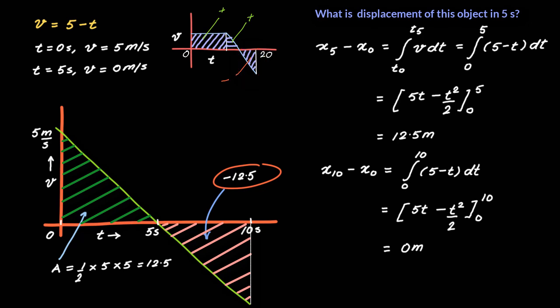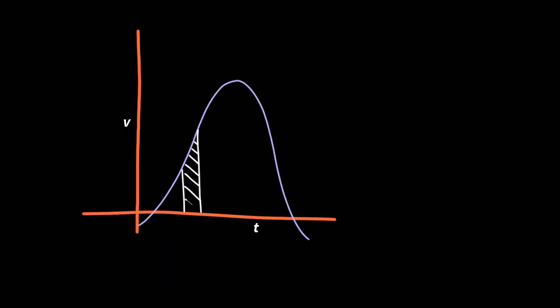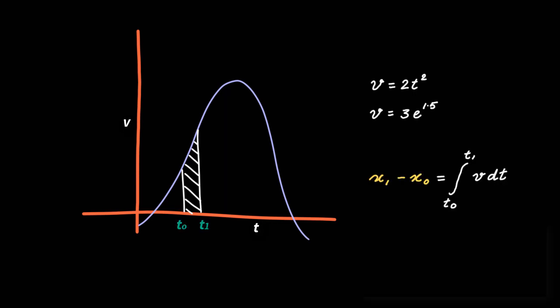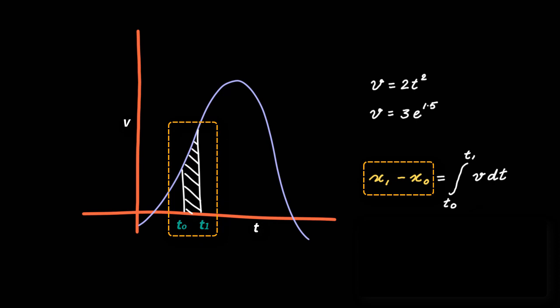You might say that why do we need to do this integration when you can just find the area of this triangle using simple geometry? You would be absolutely right, and probably that's the way you should solve a problem like this. But if you are given a velocity-time graph where the relationship between velocity and time is not linear — say v is equal to 2t squared, or v is equal to 3e to the power 1.5 — then it is not possible to use simple geometry to find the area under the curve, and you will have to use integral calculus. So for this part of the lesson, remember very clearly: the area under the curve between two times represents the change in position and not position itself at any time.